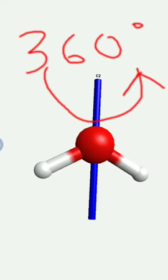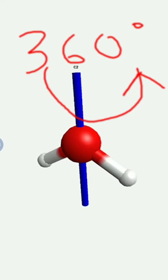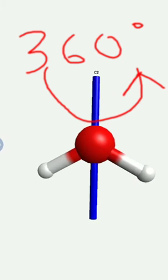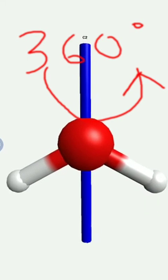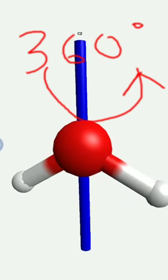If you rotate the molecule by 360 degrees, you will get similar configuration two times. That is why it is called two fold axis of symmetry.